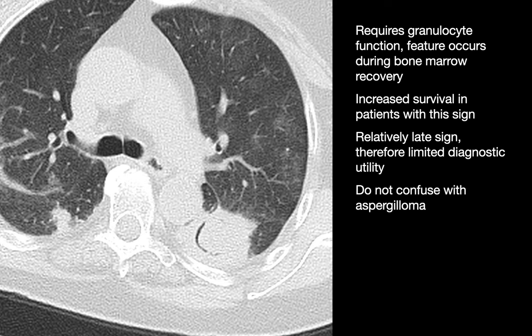Honeycombing represents end-stage reticular interstitial fibrosis, so it would be unusual to see end-stage disease without seeing less-advanced disease too. Honeycombing may be seen in the setting of all of the above: UIP, fibrotic NSIP, fibrotic HP, and sarcoid. Honeycombing has also been described in desquamative interstitial pneumonia. The answer is E — all of the above.